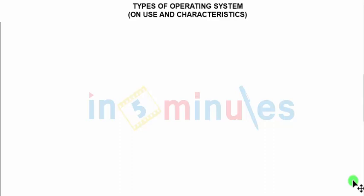Let us now try to understand the types of operating system. These types are on the basis of the use or the special characteristics which a particular operating system has.